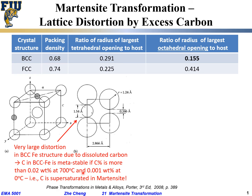At room temperature, the carbon solubility in BCC iron is so low it's about 0.001 weight percent — really, really low — because of this huge distortion of the lattice. BCC iron really cannot accommodate many carbon atoms. Under equilibrium conditions, where should that carbon go?